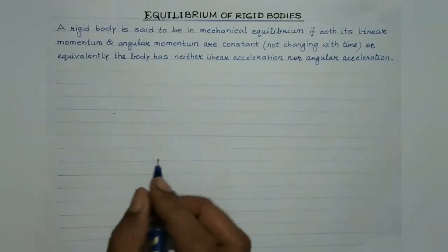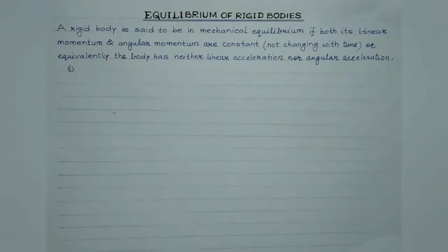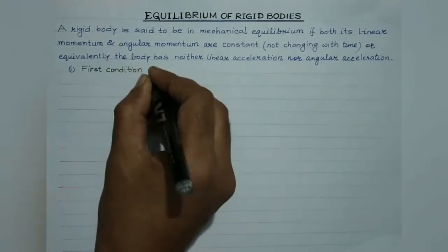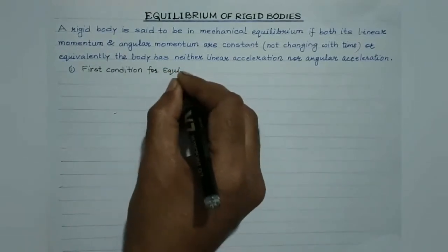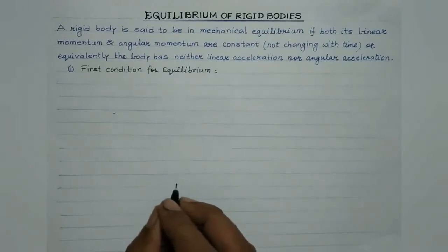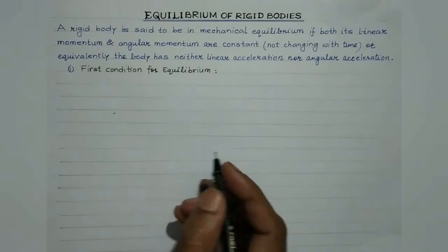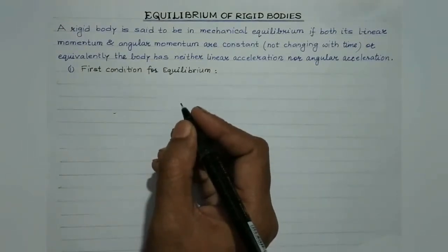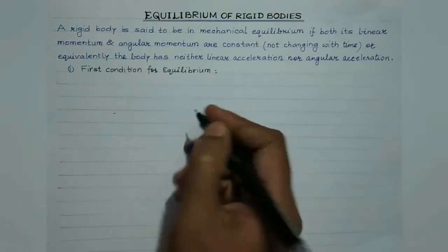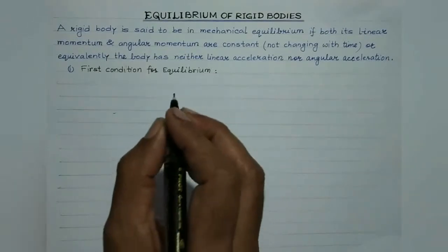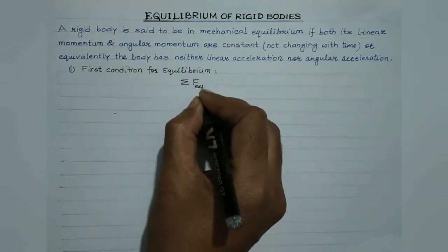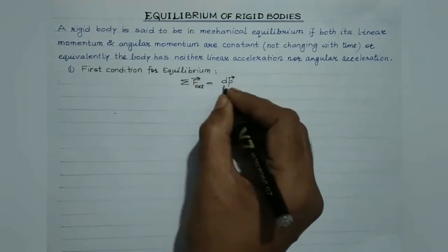Now let us proceed with the mathematical conditions and discuss the first condition for equilibrium. Considering translational motion, the translational motion of the center of mass of a rigid body is governed by Newton's second law, which states that the time rate of change in momentum is directly proportional to the external force applied. The net external force acting on the body is given by the time rate of change in linear momentum.